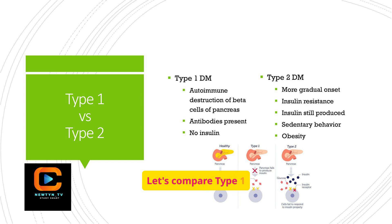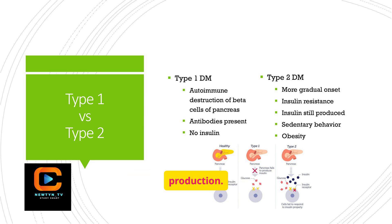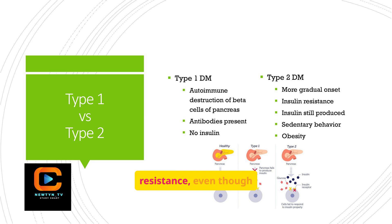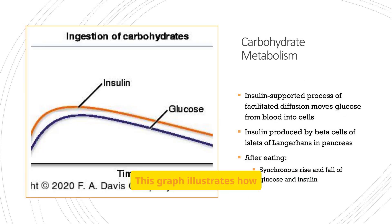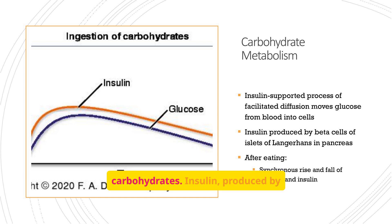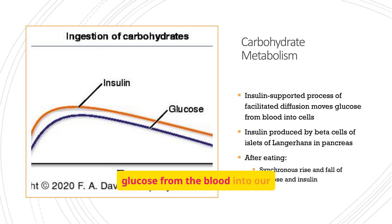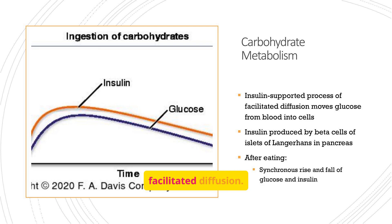Let's compare type 1 and type 2 diabetes. Type 1 involves autoimmune destruction of beta cells, leading to no insulin production. Type 2, on the other hand, is characterized by insulin resistance, even though insulin is still being produced, and is often associated with sedentary behavior and obesity. This graph illustrates how glucose and insulin levels change after we eat carbohydrates. Insulin produced by the beta cells in the pancreas helps move glucose from the blood into our cells, a process called insulin-supported facilitated diffusion.